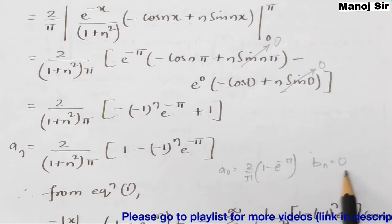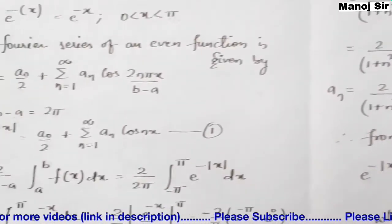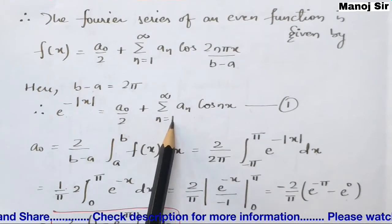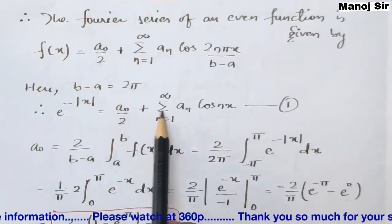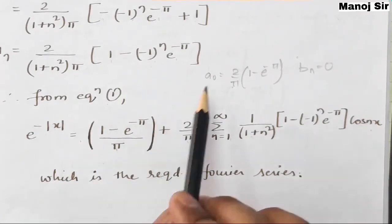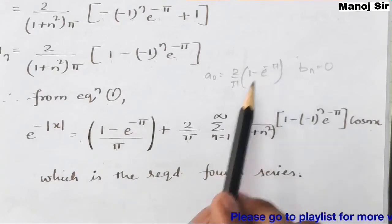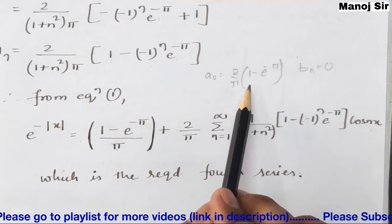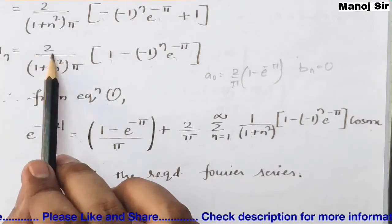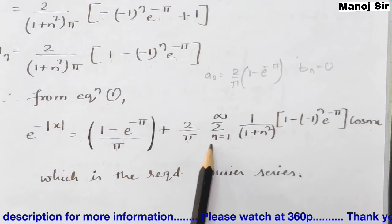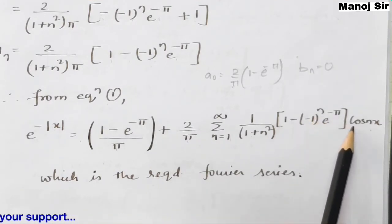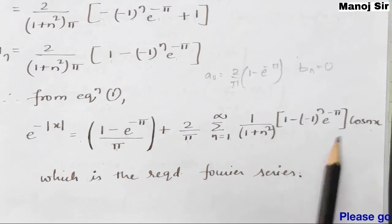After substituting limits: aₙ = (2/((1+n²)π)) × [e^(−π)(−(−1)ⁿ) − (−1)] = (2/((1+n²)π)) × [1 − (−1)ⁿ e^(−π)]. The final Fourier series is: e^(−|x|) = (1−e^(−π))/π + (2/π) Σ(n=1 to ∞) [1/(1+n²)] × (1 − (−1)ⁿ e^(−π)) cos(nx).